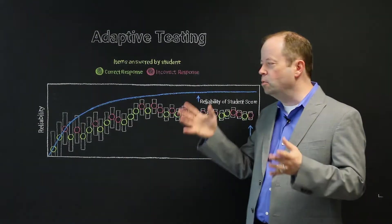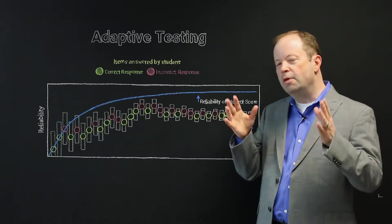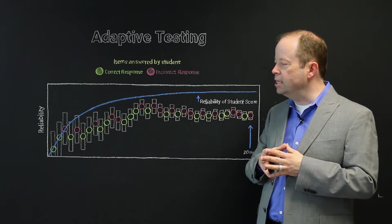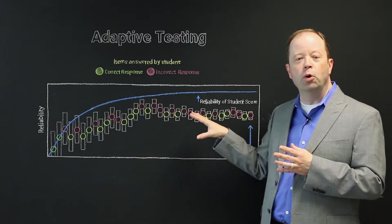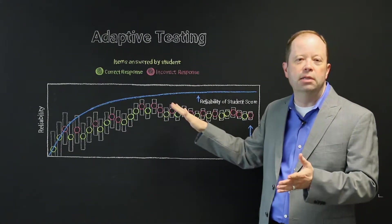So our 34 question adaptive test has the same power as giving somewhere between 68 to 102 items on paper. Now, how can that be? And why is it so much more productive? If you think about this, what some folks will say is when you are adapting the test, you are avoiding the floor or the ceiling effect.